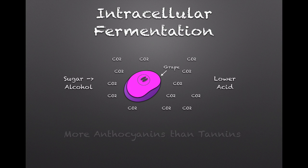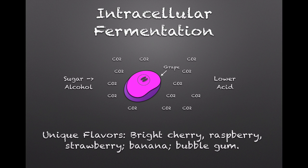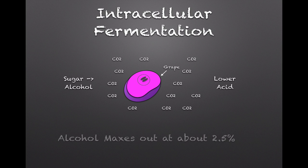However, more anthocyanins — the color compounds — make their way in than do tannins, so the resulting juice in the pulp will be brightly colored but relatively low in tannin compared to extraction from traditional juice and skin contact. A number of other reactions also take place inside the grape that create unusual flavors in the juice, including particularly bright examples of red fruits like strawberry, raspberry, and cherry, as well as banana and bubblegum. Finally, when the alcohol level in the individual berries reaches about 2.5%, the berries will die and this process will shut down.